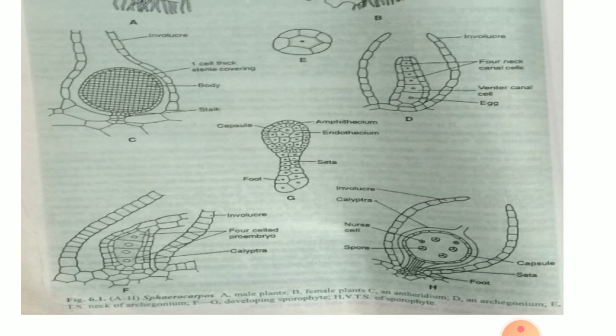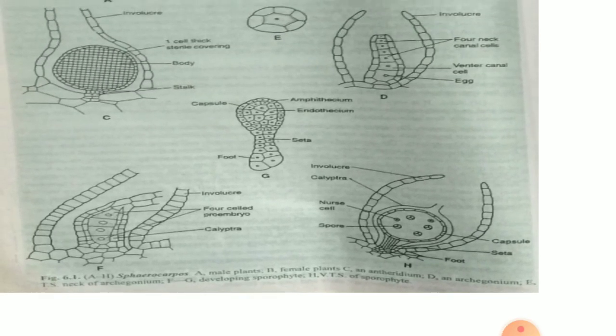The development of the sporophyte of Sphaerocarpus: After fertilization, the zygote divides by mitosis and forms two cells. The upper cell, which is diploid, is called the epibasal cell, and the lower cell, which is also diploid, is called the hypobasal cell. Both cells again divide by transverse division and form a four-cell filamentous proembryo. Each cell of proembryo divides by two longitudinal divisions at right angles to each other, and a sixteen-cell embryo is produced in which eight cells are arranged in two tiers in the epibasal part and the remaining eight cells are arranged in the hypobasal part. The epibasal part forms the capsule, and the hypobasal part forms the small foot and a very small seta.